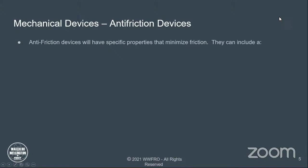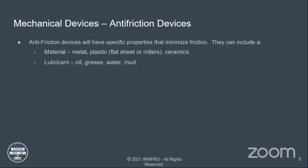Anti-friction devices have specific properties that minimize friction. They can include materials — either metal, plastic (flat sheet or rollers), and ceramics. Lubricants such as oil, grease, water, and mud — they use a mud slurry when drilling oil wells. Coatings such as Teflon, graphite (the same material in your pencil), and molybdenum. Or mechanical devices — bearings. We're going to talk a lot about bearings because they're very important.